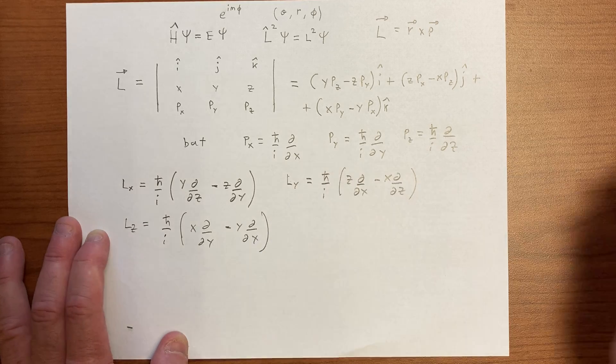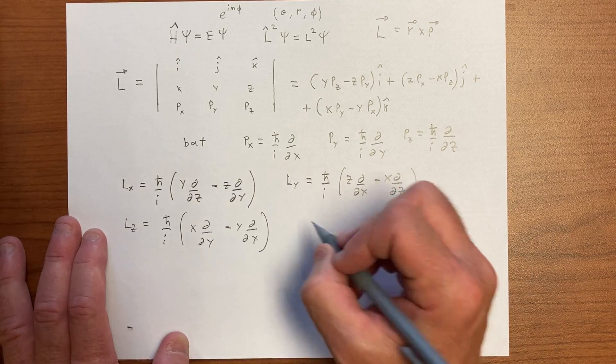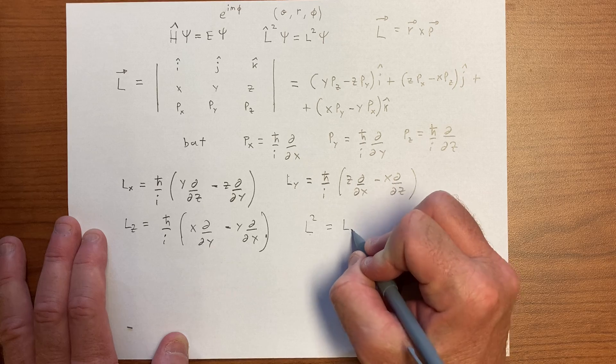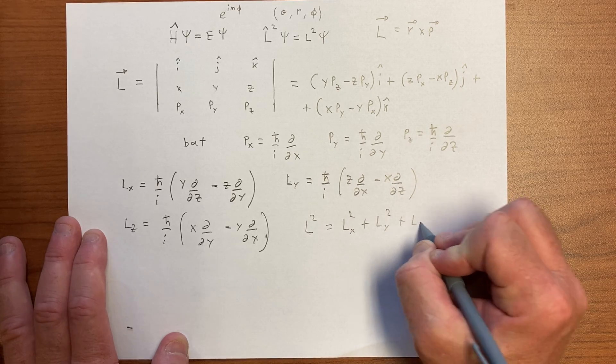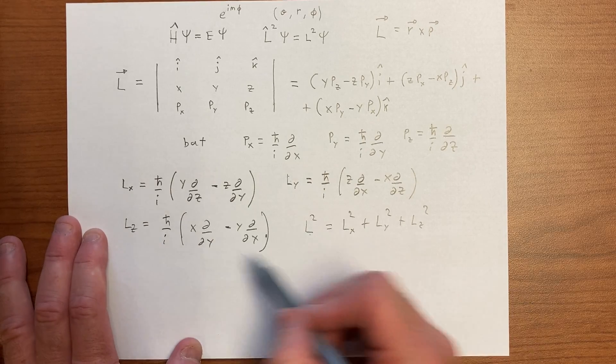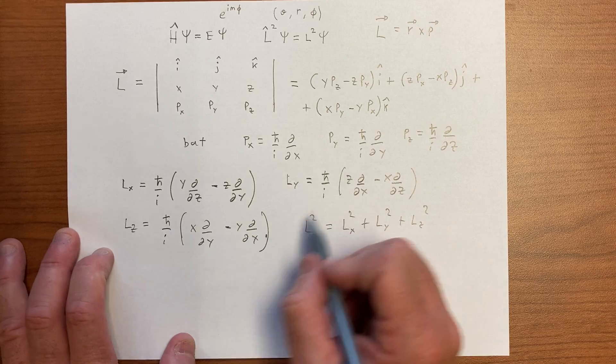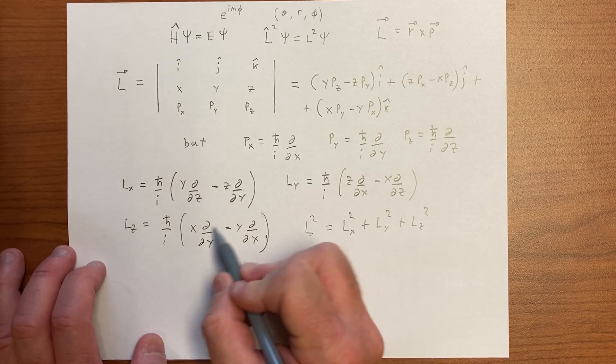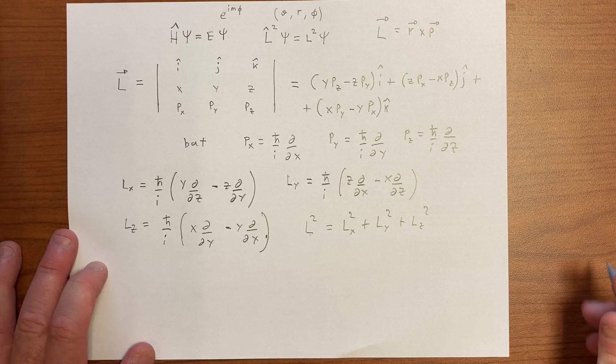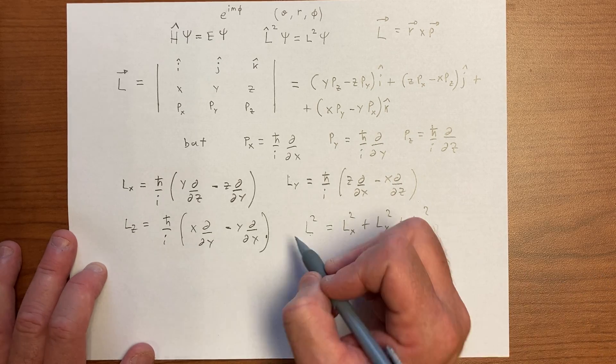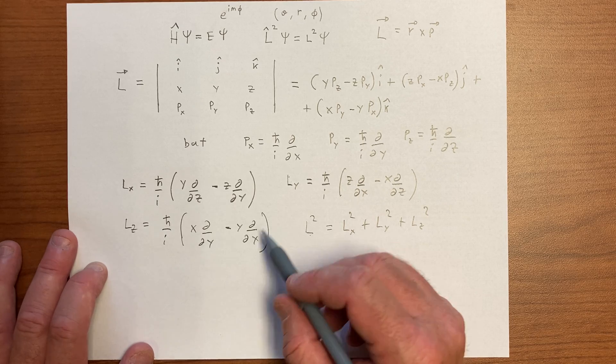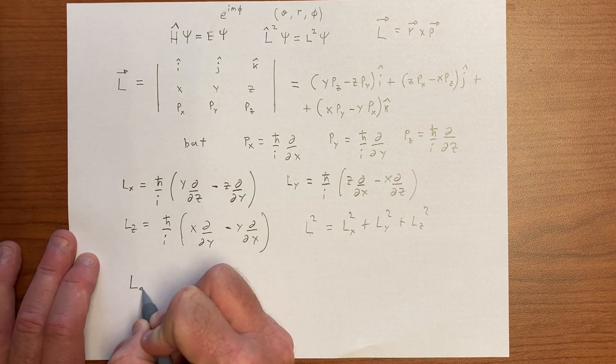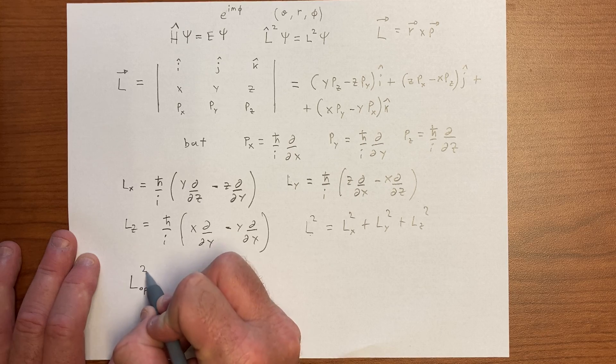And if we were to construct L squared, we would be doing L_x squared plus L_y squared plus L_z squared, and then we can do a transformation of coordinates. We won't go through this entire process to go into these coordinates, and we would end up, so this is an operator, an operator with these squared quantities, these operations, these partial derivatives.